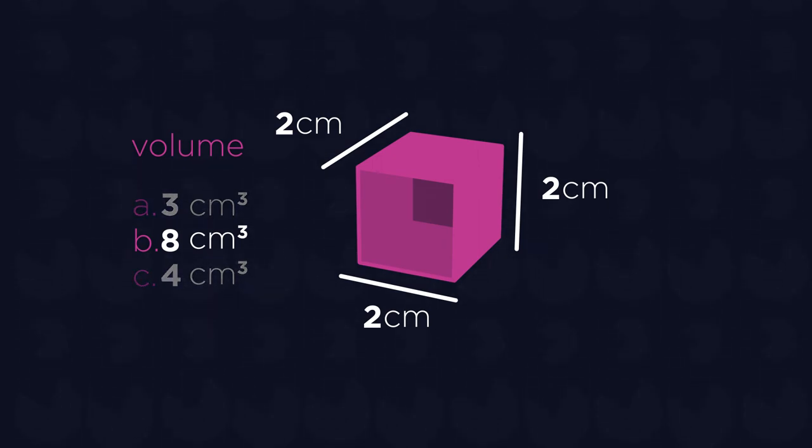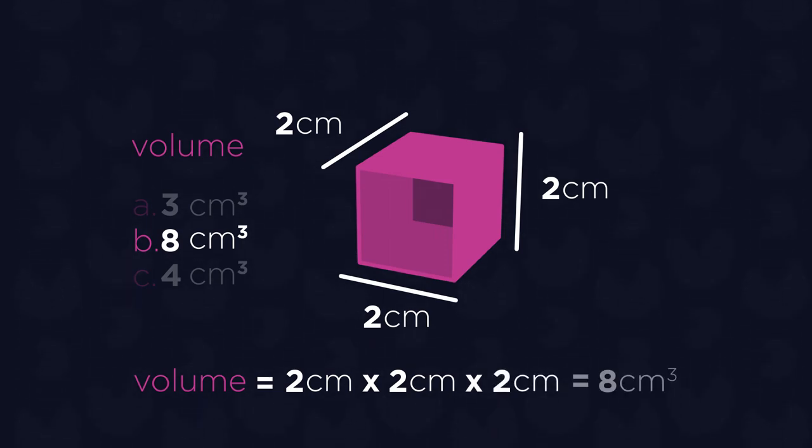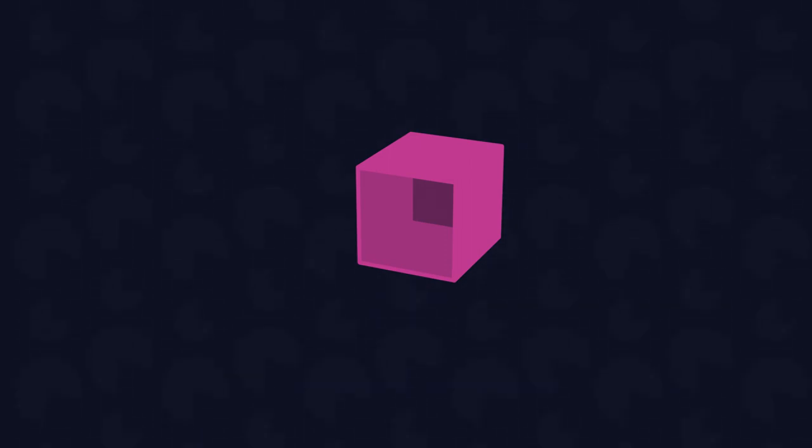The correct answer is B. If we enlarge each edge of our cube by a scale factor of 2, our new volume will be 2cm times 2cm times 2cm, or 8cm cubed. The rule of thumb here is that when the lengths of a shape are multiplied by a constant scale factor, represented by K, then the volume will be multiplied by K cubed.